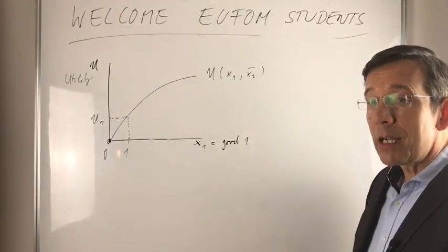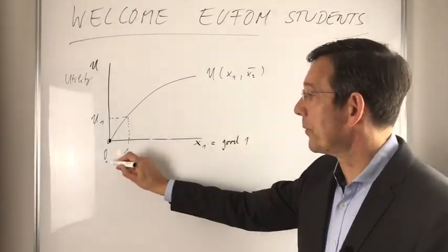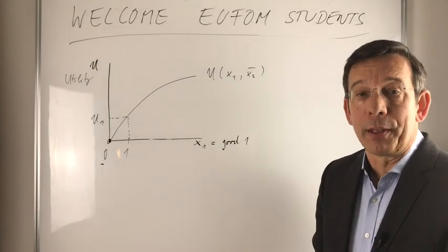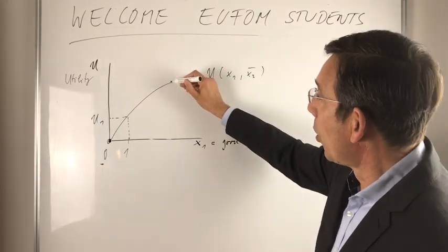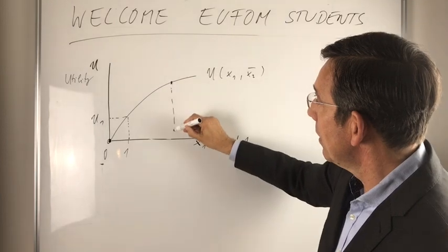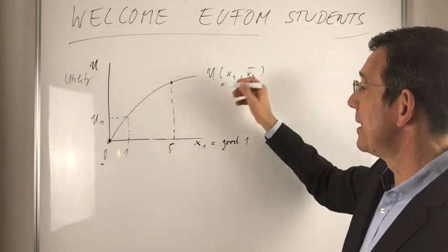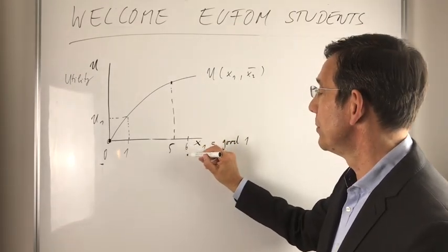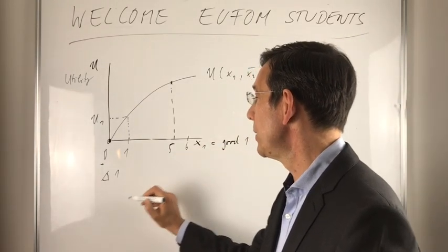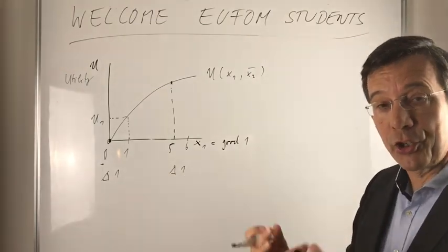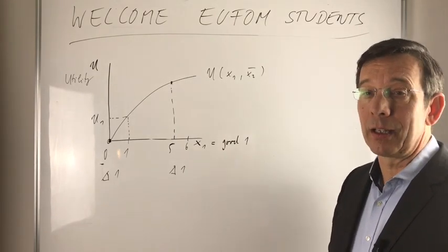And the idea of such a utility function is that it matters if you start from zero and have one additional quantity or unit of a good, or if you start with already, let's say, five units of that good and then you increase your consumption from five to six. So the change here is one. The change is one. The change in the quantity of consumed goods is the same.